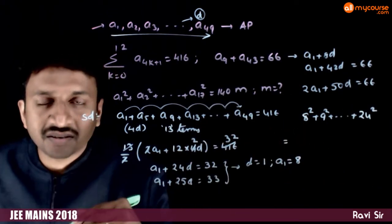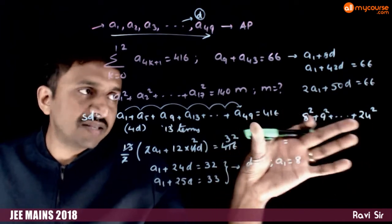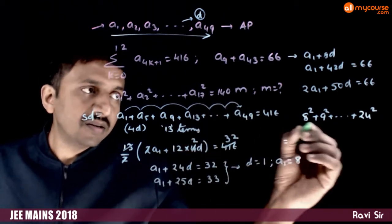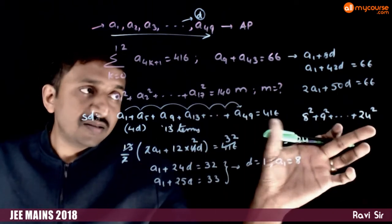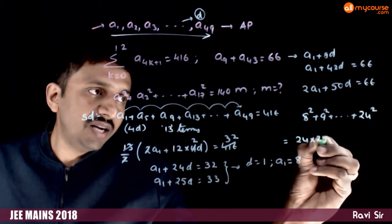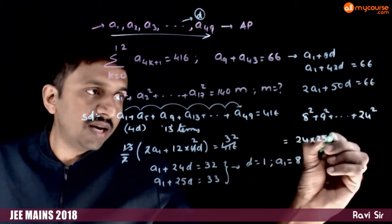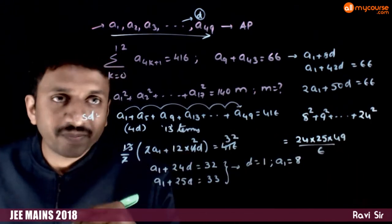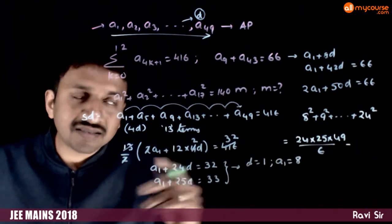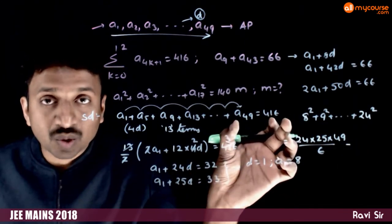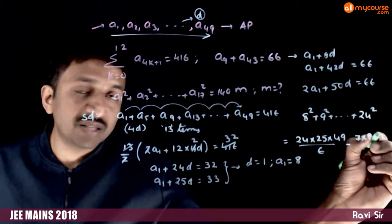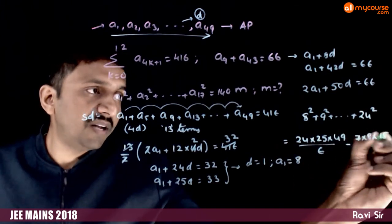I will sum from 1 square to 24 square and I will subtract the sum of 1 square to 7 square. Using the formula, sum of these squares is n into n plus 1 into 2n plus 1 by 6. So, 24 into n plus 1 into 2n plus 1 by 6. This is the sum up to 24 square from 1 square minus I need to subtract the sum up to squares of first 7 numbers. 7 into 8 into 15 by 6.